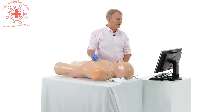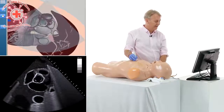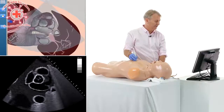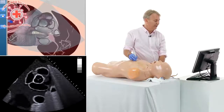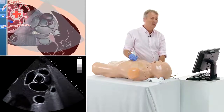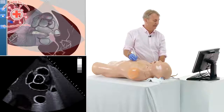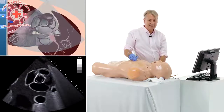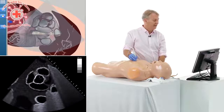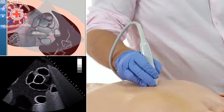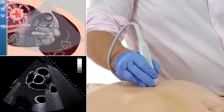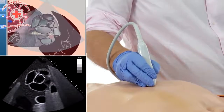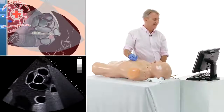Let's look at the short axis view on the simulator and see how we can identify the different cusps of the aortic valve. This cusp, which is close to the interatrial septum, is the acoronary cusp. The cusp close to the pulmonary artery is the left coronary cusp, and the one close to the right ventricular outflow tract is the right coronary cusp. Once you identify the cusps, it's also easy to tell which coronary arteries leave the aortic root — here would be the right coronary artery and here is the left coronary artery.